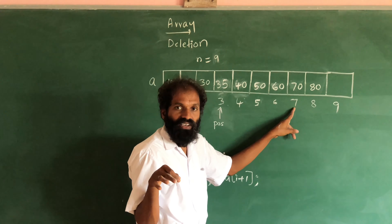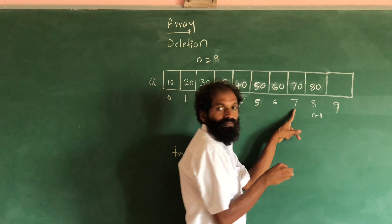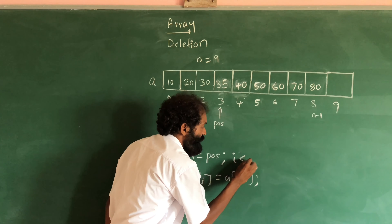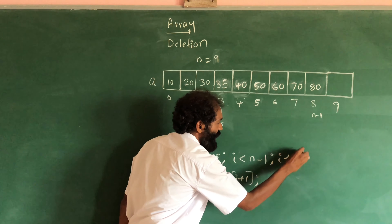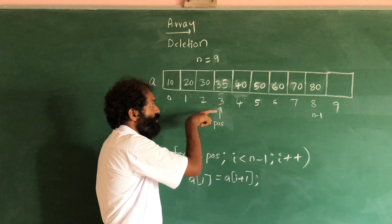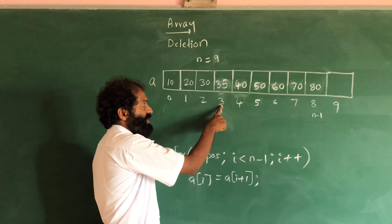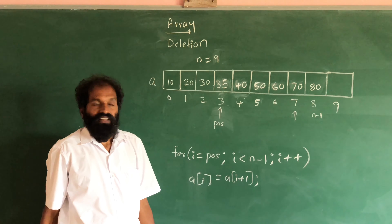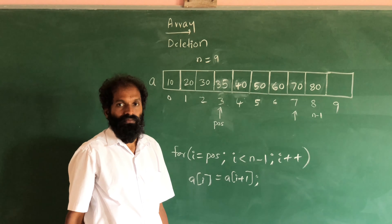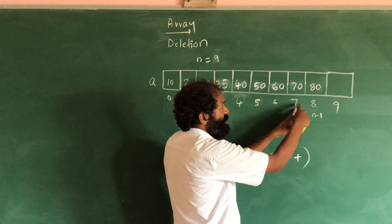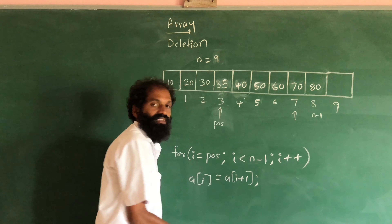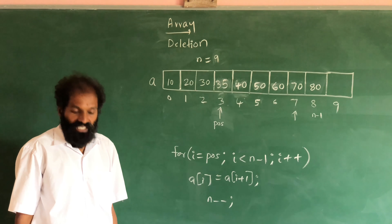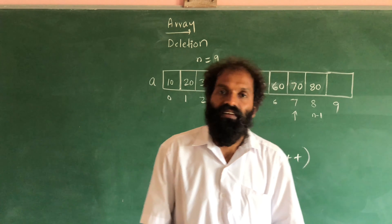The loop should end at n minus 1. So i value should be less than n minus 1, with i plus plus, because we are moving in the forward direction. i starts at position 3, then 4, 5, 6, 7 — and we stop there. When i becomes 7, a[i+1] means a[8] will be copied here. Once we delete the element, n minus minus, so n becomes 8. In this way we can delete an element from the array.